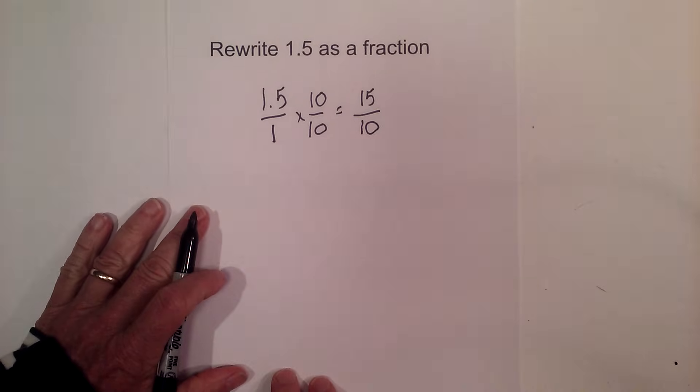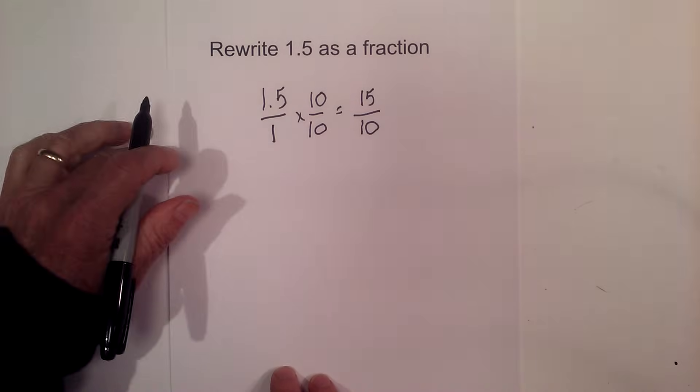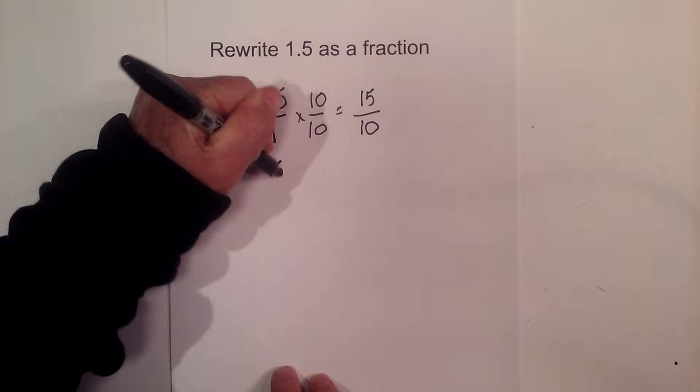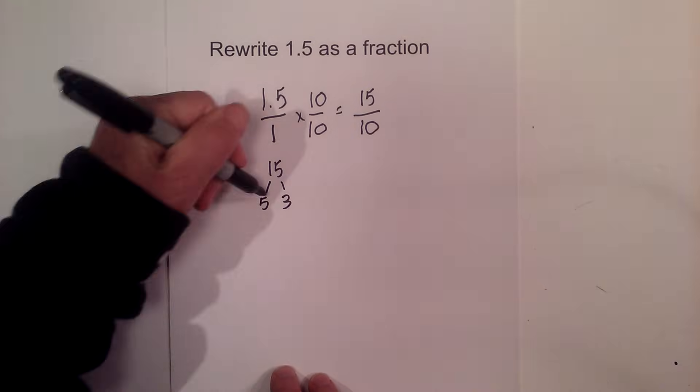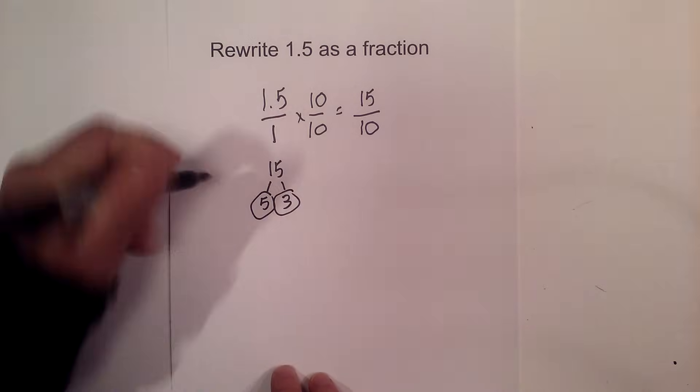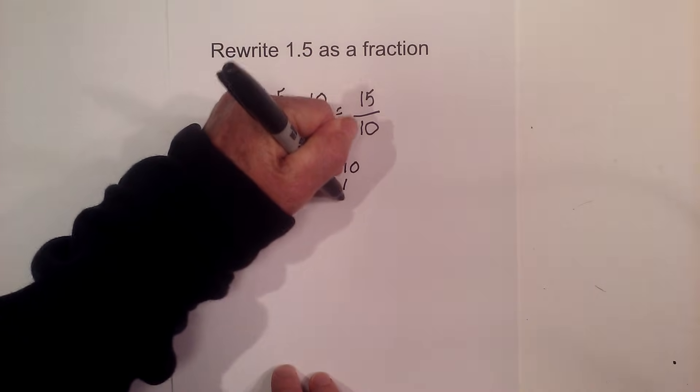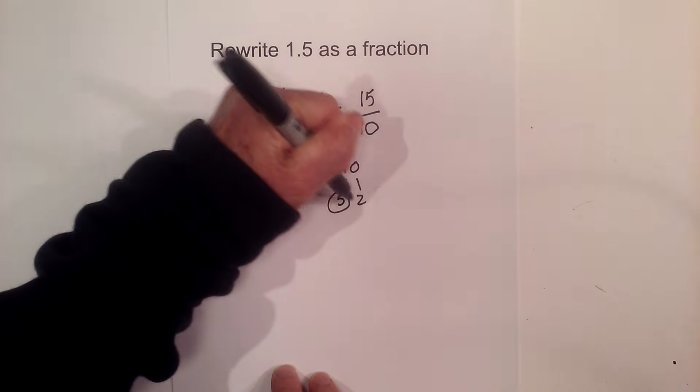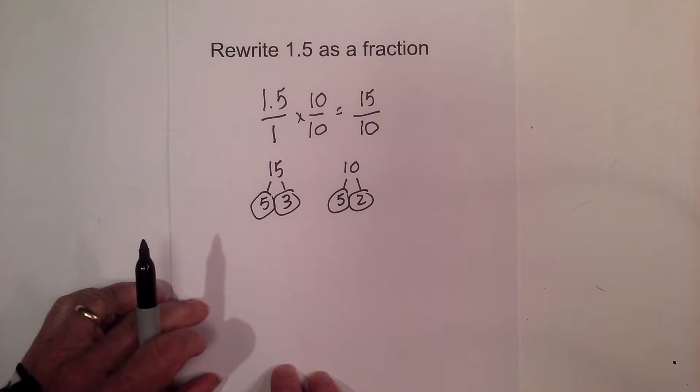So now I need to reduce or simplify the fraction 15/10. I can do that by finding the greatest common factor, and I'm going to use a factor tree. So the prime factors for 15 is 5 and 3. And then for 10, you have 5 times 2. Circle the prime numbers. And so now those are the prime numbers for 15 and 10.